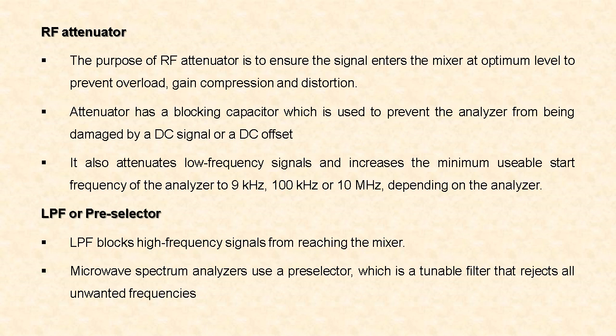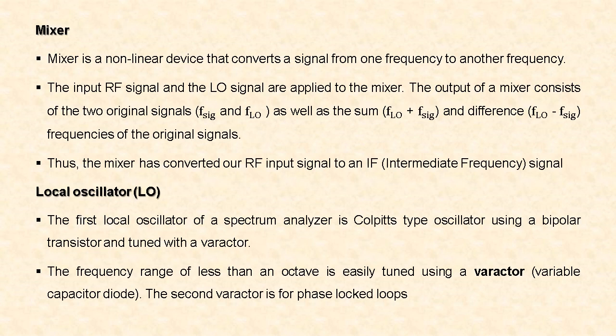Next is the low-pass filter, which blocks high-frequency signals from reaching the mixer. Microwave spectrum analyzers use a pre-selector, which is a tunable filter that rejects all unwanted frequencies. After passing through the pre-selector, the signal enters the mixer, which is a non-linear device that converts a signal from one frequency to another. The RF signal and local oscillator signal are applied to the mixer; the output consists of the original signals plus their sum and difference, converting the RF input to an intermediate frequency signal.